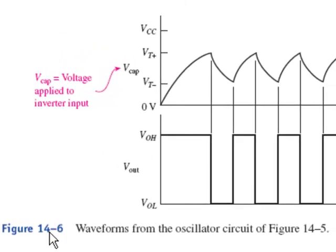So figure 14-6 shows the waveforms that will be seen on a dual trace oscilloscope. We'll put one of the scope traces on the capacitor and watch what happens. It starts at zero. It will charge up to the upper threshold because it's trying to reach the V_out high which is going to be close to 5 volts. So it's trying to go up to 5 volts, it's going to cross the upper threshold.